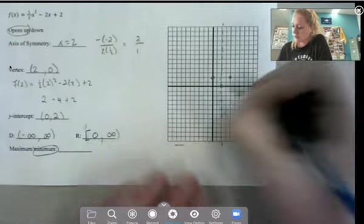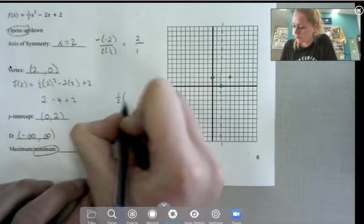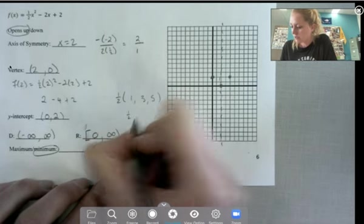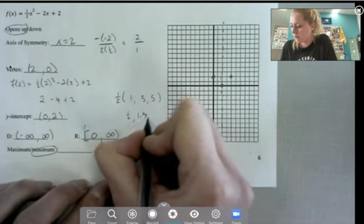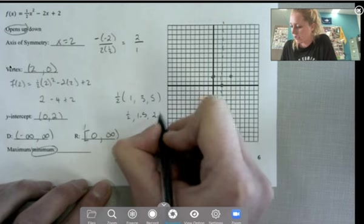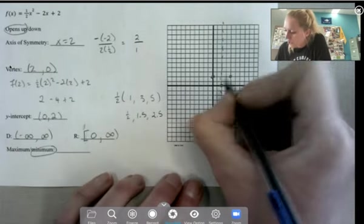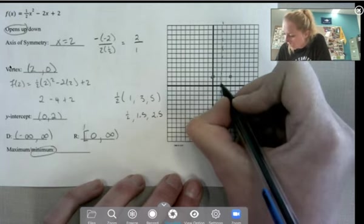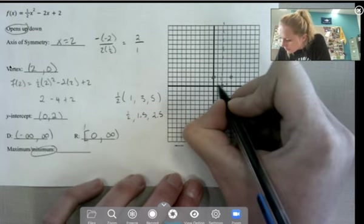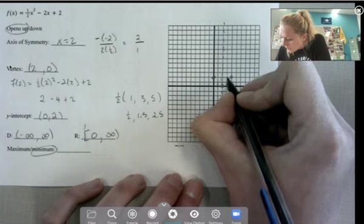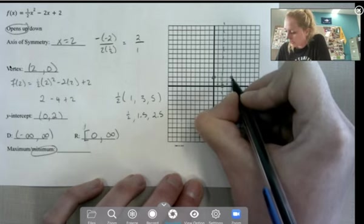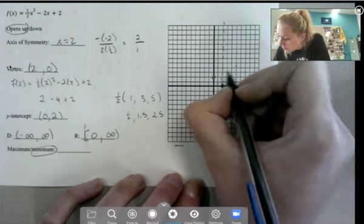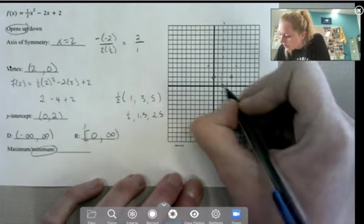All right. So to get all my points, we're going to do 1 half times 1, 3, 5. 1 half times 1 is 1 half. 1 half times 3 is 1 and 1 half. 1 half of 5 is 2 and 1 half. So to get these points, we already have 1 on here, but I'm going to use my pattern. So up 1 half and over 1. And up 1 and 1 half and over 1. That's the point that's already there. And then up 2 and 1 half and over 1. We'll go ahead and put one more on there.